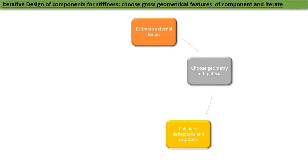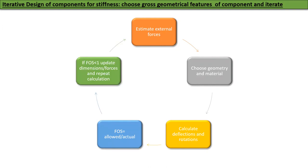Then you calculate, for this particular case, factor of safety equals allowed deflection divided by actual deflection. If the factor of safety is less than one, update dimensions or forces and repeat calculations. This is for stiffness—we want high stiffness, that's why we do this.